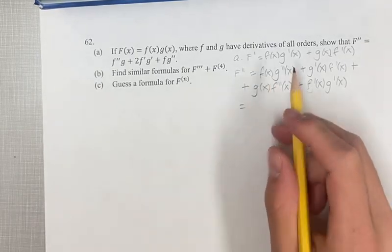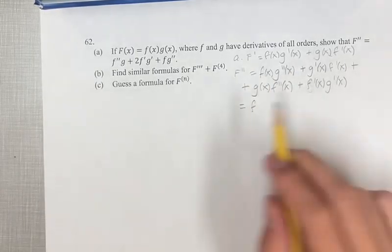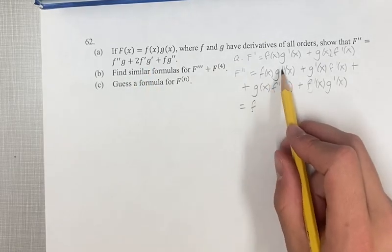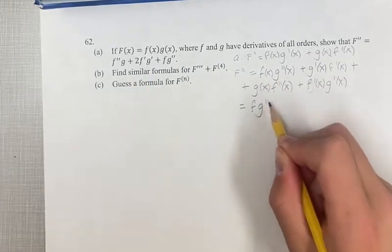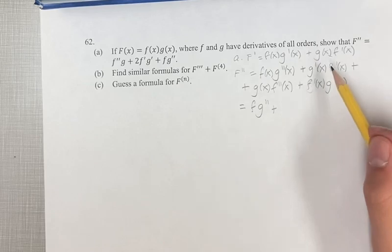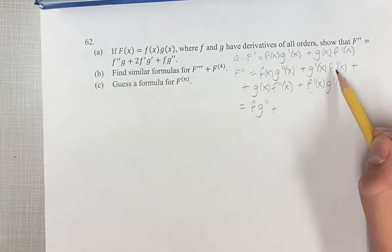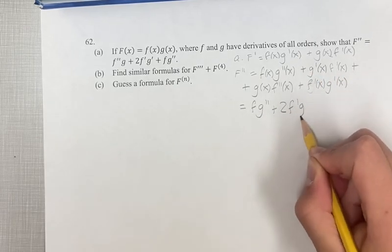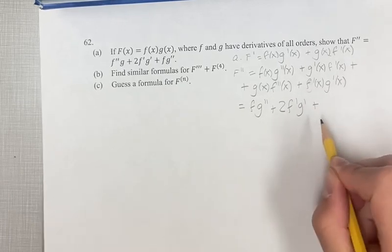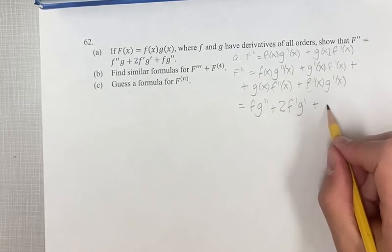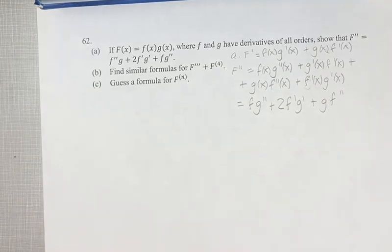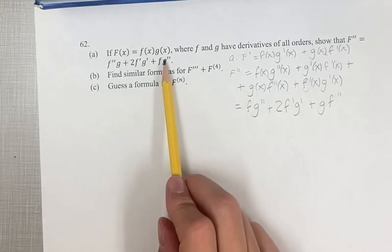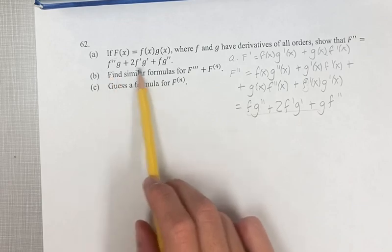In solving this, we have f times the second derivative — I'll get rid of the x's — so you have f times g double prime, plus f prime g prime, plus another f prime g prime, so that's two f prime g prime combining like terms, plus g f double prime. These two terms are switched in order, but this is equivalent.